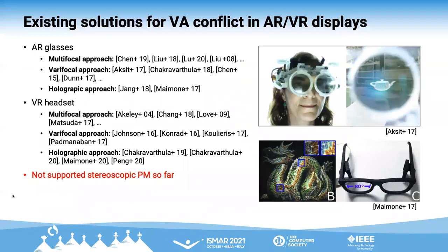There are a bunch of existing solutions for the vergence-accommodation conflict in AR-VR displays, but we couldn't find the method that alleviated this problem for stereoscopic projection mapping so far.